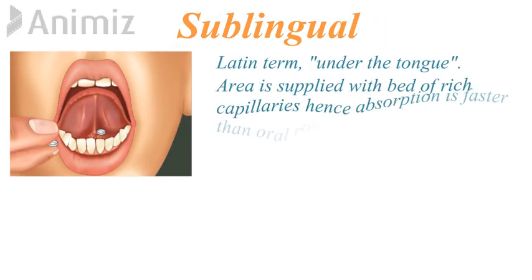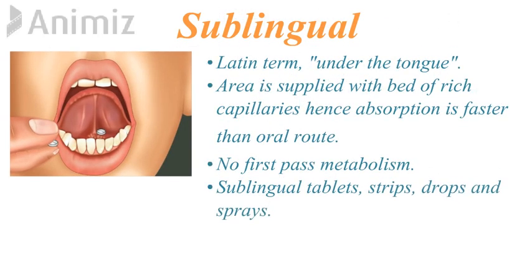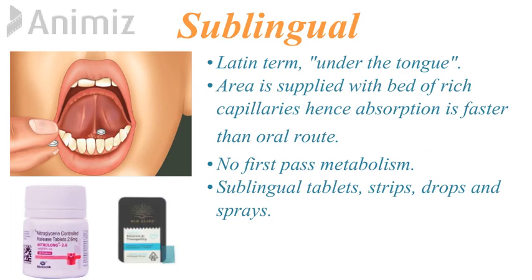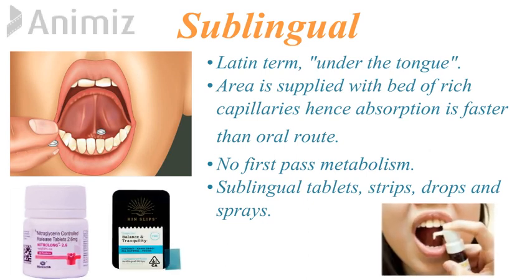Next is sublingual route of administration. Sublingual is a Latin term which means under the tongue, so in this route a drug is placed under the tongue. The rate of absorption is faster compared to oral route because the area under the tongue is supplied with a bed of rich capillaries providing a high surface area for absorption. There is no first-pass metabolism, and sublingual tablets, strips, drops, and sprays are usually given by this route.